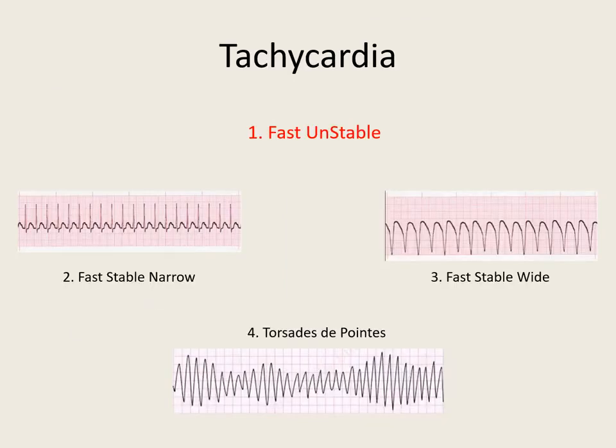Look for those serious signs and symptoms to determine if they are stable or unstable. In this presentation, we're going to talk about these four tachycardic areas: Are they fast and unstable? Fast, stable and narrow? Fast, stable and wide? Or do they have torsades de pointes?